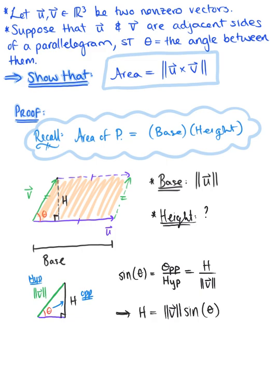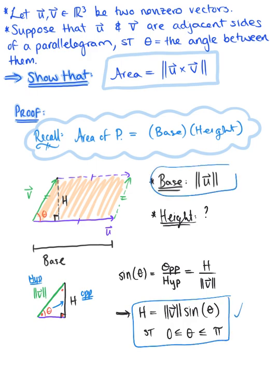Keeping in mind that the sum of all angles in our triangle must be 180 degrees, we include the restriction that theta is greater than or equal to zero and less than or equal to pi. We now have both the height and the base, and we're ready to go.